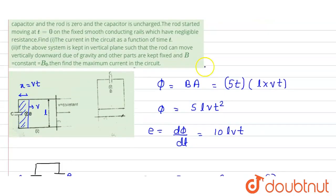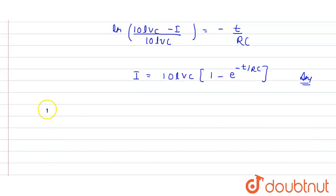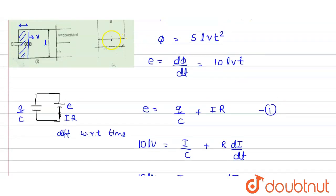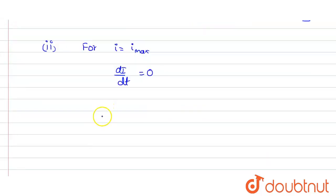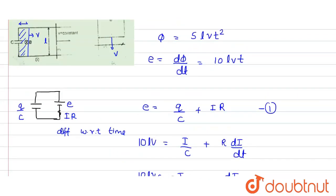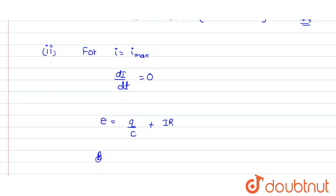In the second part, we need to find the maximum current when the system is in a vertical plane. At I equals I_max, DI/DT equals zero. Since the magnetic field is constant, there is a velocity-induced EMF due to the rod's changing velocity. Applying KVL: B·L·V = Q/C + I·R. Differentiating with respect to time: B·L·(DV/DT) = I/C + R·(DI/DT). At maximum current, DI/DT = 0.